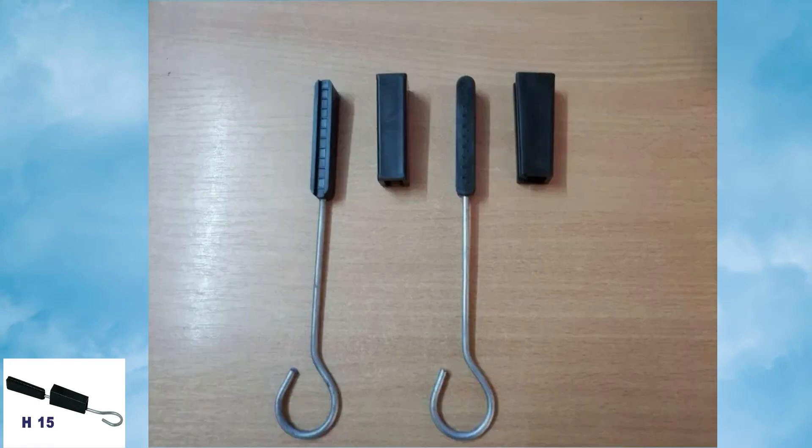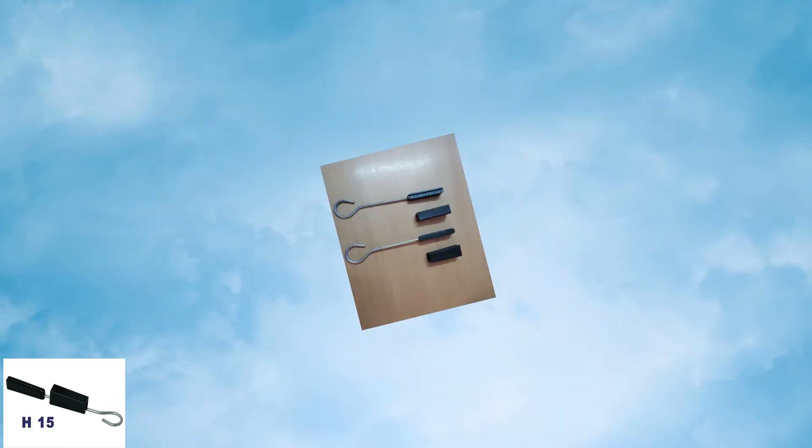Clamp H15 consists of a plastic frost and UV resistant body, polymeric wedges, and loop made of hot-dipped galvanized steel.